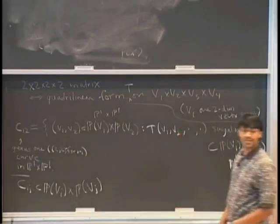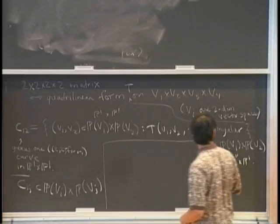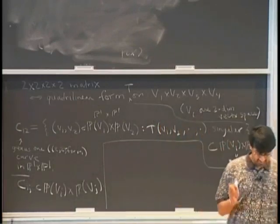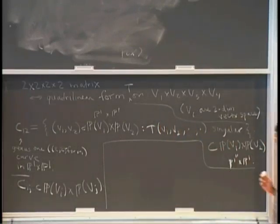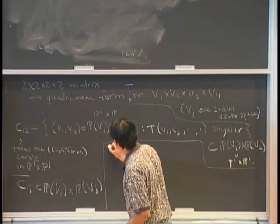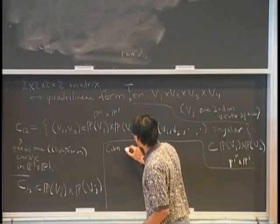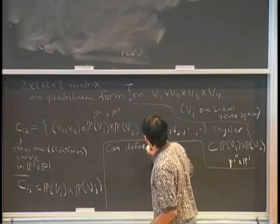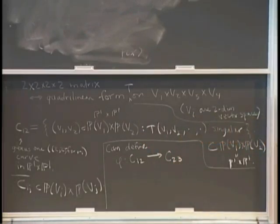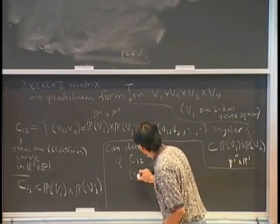So then the natural question arises: are these isomorphic curves? Are they isomorphic embeddings into P1 cross P1? Here's how you can show that they're actually all isomorphic curves. It turns out they're not isomorphic embeddings into P1 cross P1, but they are isomorphic curves. Here's a way to see that C_{12} and C_{23} are isomorphic. One can define a map phi from C_{12} to C_{23} as follows.